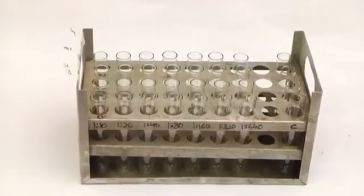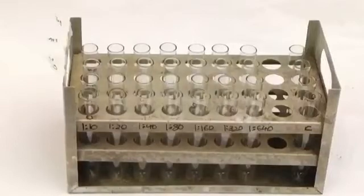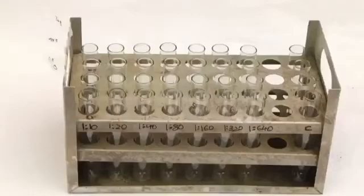Tube method. Take appropriate number of sets, one set for each antigen suspension of eight con tubes or test tubes and label them 1 to 8.